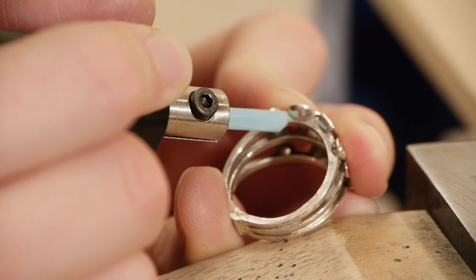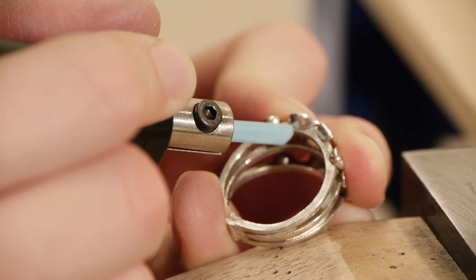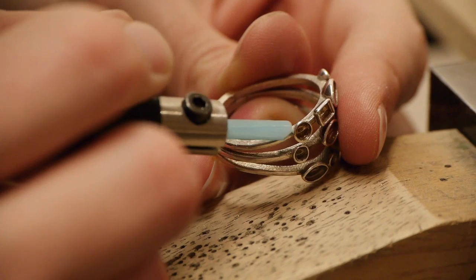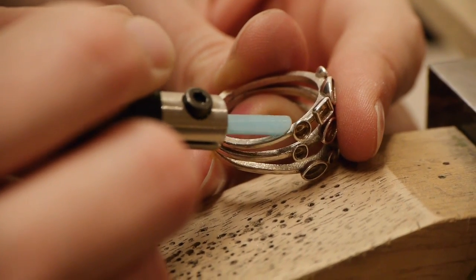So this is the 800 grit blue ultrafine ceramic stone. Coarser grits of ultrafine ceramics are available and also diamond grits.